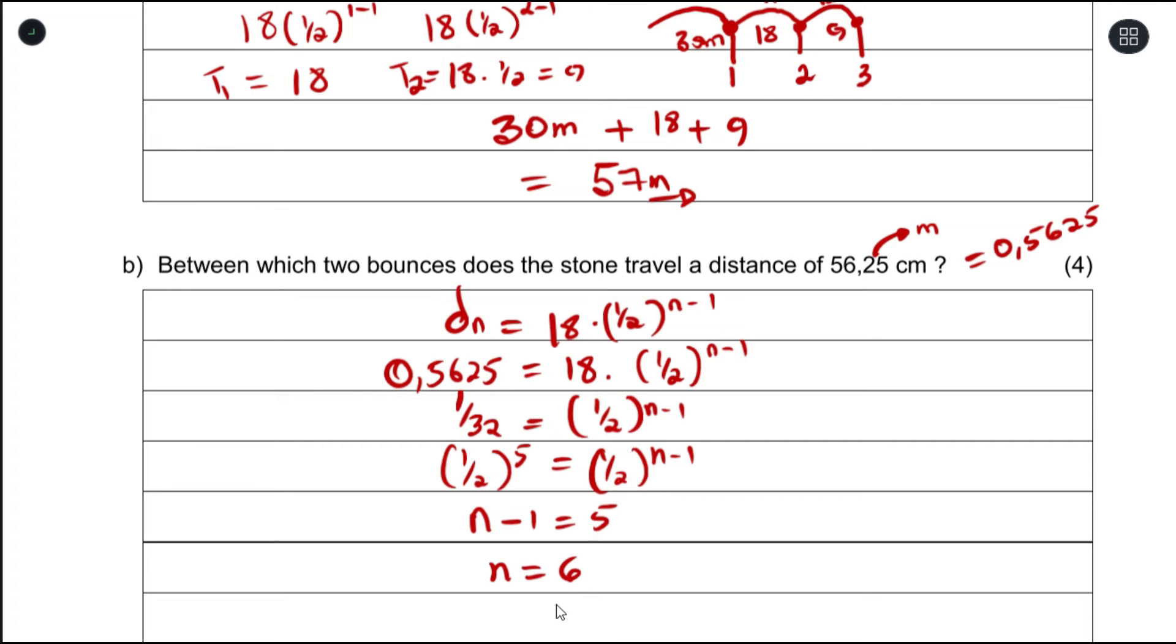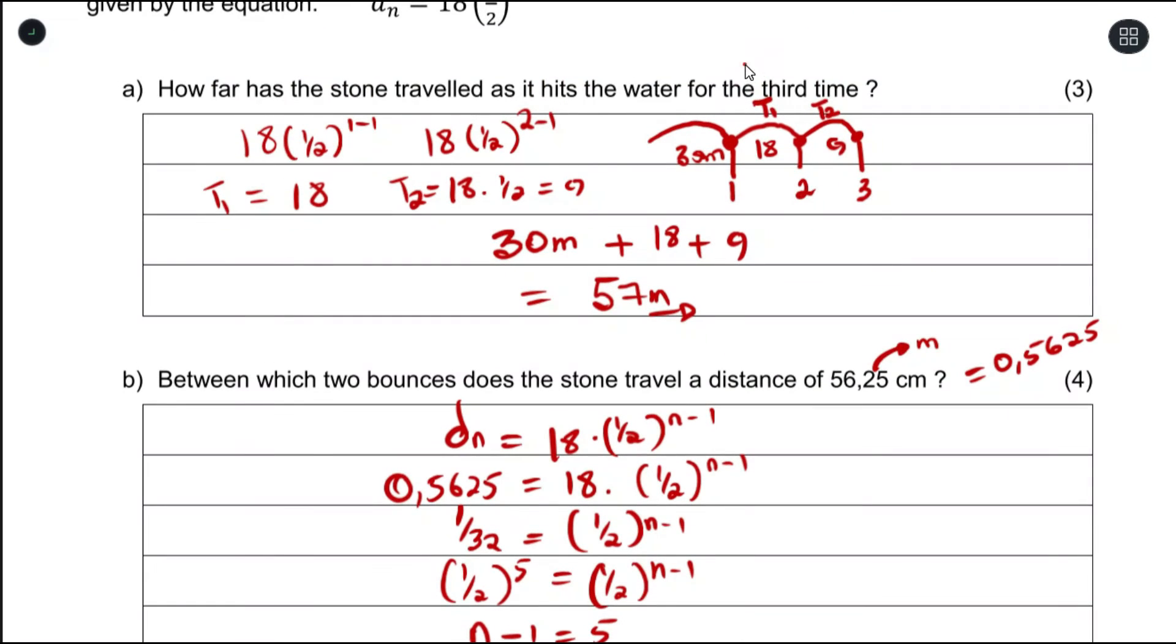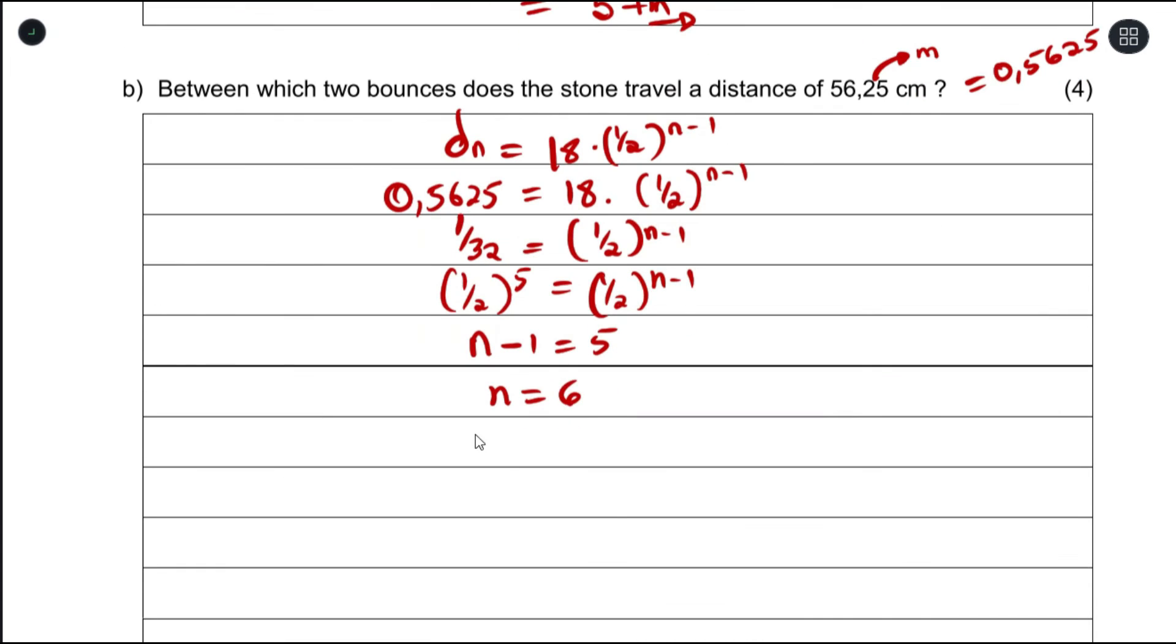So if n equals 6, we know that d_1 is between the first and second bounce, d_2 is between the second and third. So we say it does this between the sixth and the seventh bounce. That's where it travels a distance of 56.25 centimeters.